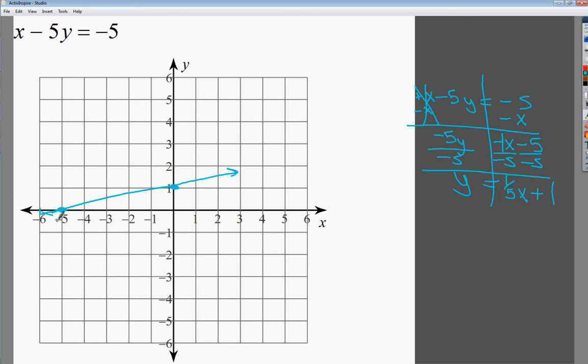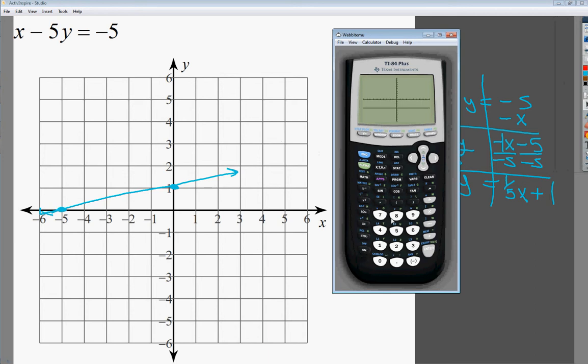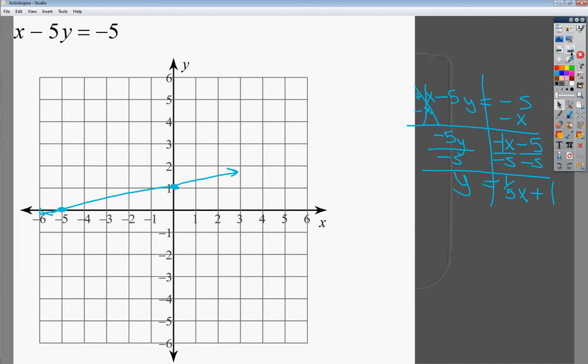So either one of those methods is fine, and this one actually is one that you could potentially graph in the calculator now that you have it in slope-intercept form. So if we had y is equal to 1 over 5x plus 1, you can get the nice graph that I've had the entire time, which might be helpful once you start doing systems of equations where you have to do multiple graphs on one graph, or you have to do multiple lines on one graph.